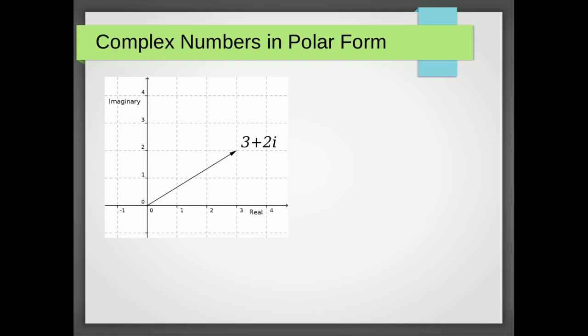In this video we're going to look at how to write a complex number in polar form. At the moment we call this rectangular form because we're saying how far across and how far up, similar to giving the xy coordinates of a point on a graph. Now we're going to do it in terms of polar coordinates — saying how far along it is to that point and through what angle we turn to go in the correct direction.